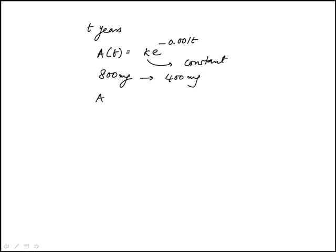So, initial would be when t is 0, and this would be e to the power of minus 0, which is 1, and that needs to be 800. So essentially, k is 800.